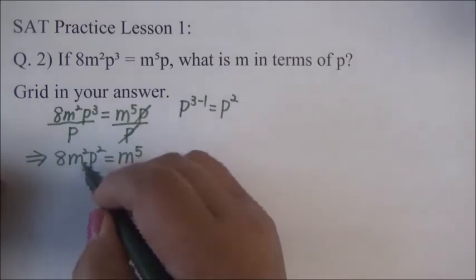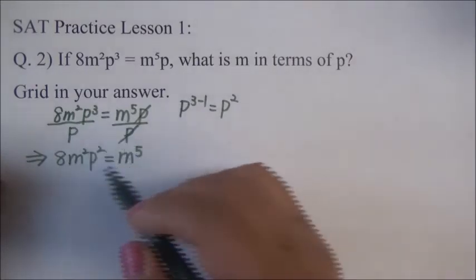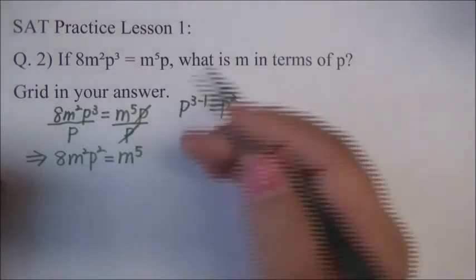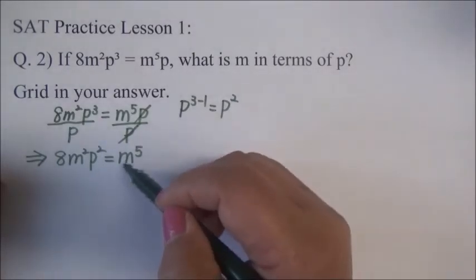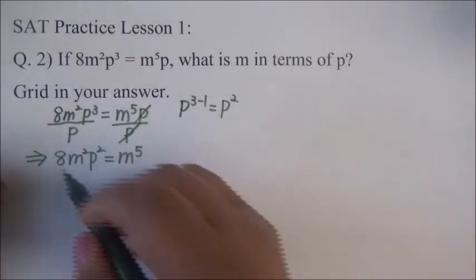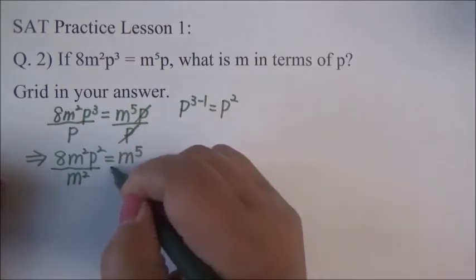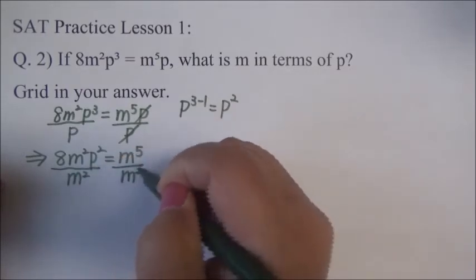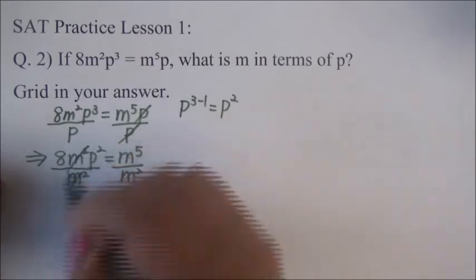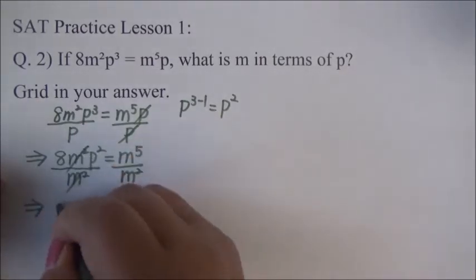And now, we don't want M squared here because we want M is equal to something that's just make M by itself. So, we're going to divide both sides by M squared. So, this and this will be gone.